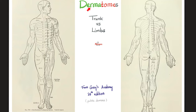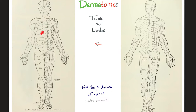Here are your lovely dermatomes. Notice that the dermatomes in the trunk are parallel to each other but transverse. As we go to the extremities, they are parallel for the most part but longitudinal — not transverse anymore. Why? Back to embryology: your trunk was made first, and then your limbs start to bud out of your trunk. As they bud out, they stretch the dermatomes with them — that's why you have the longitudinal pattern in your limbs. The trunk is transverse because of the same transverse organization as the spinal cord.